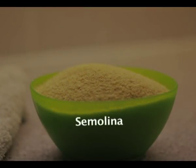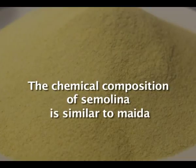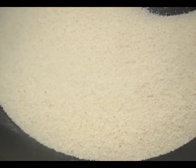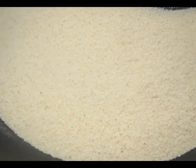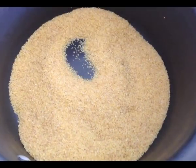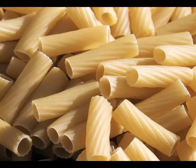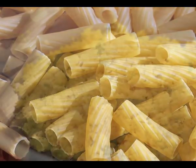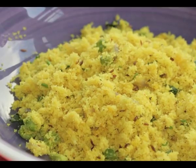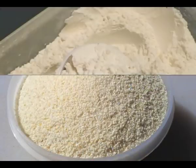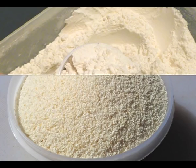Another product obtained from wheat is semolina, also known as rava. The chemical composition of semolina is similar to maida in that the outer bran and pericarp are removed, but the endosperm instead of being converted into fine flour is pulverized into coarse grains. Although the chemical composition is similar to maida, the structure is different. Semolina is widely used in Indian cookery to prepare upma, rava kesari and so on.